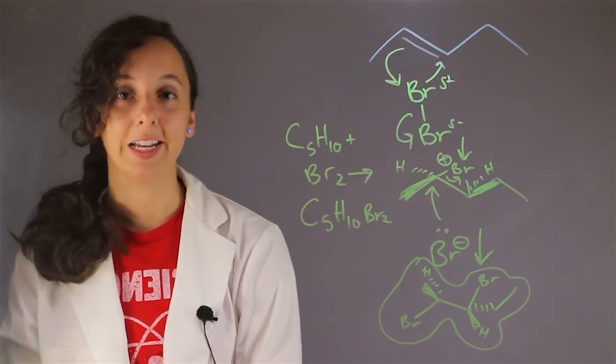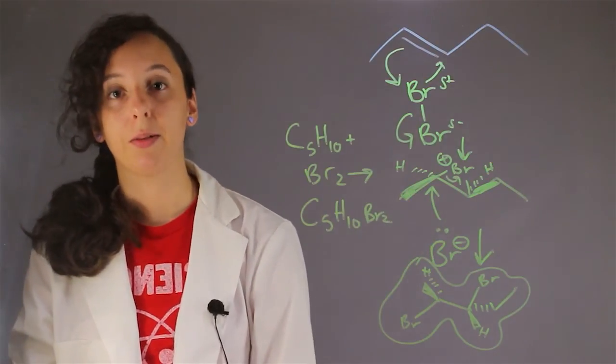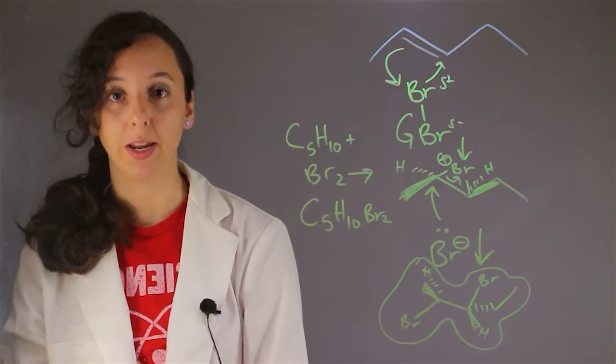And I'm Robin Higgins. And this has been the balanced chemical equation for the reaction between 2-pentene and bromine.